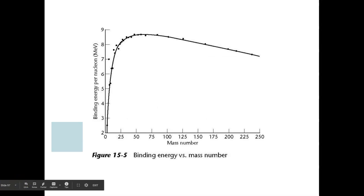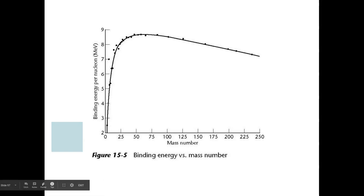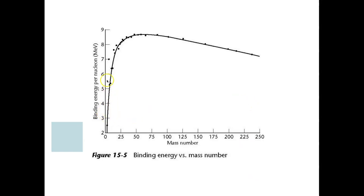To understand why fission and fusion give off so much energy, we need to talk about binding energy. Here is a very famous graph showing binding energy per nucleon — nucleon meaning a proton or neutron.